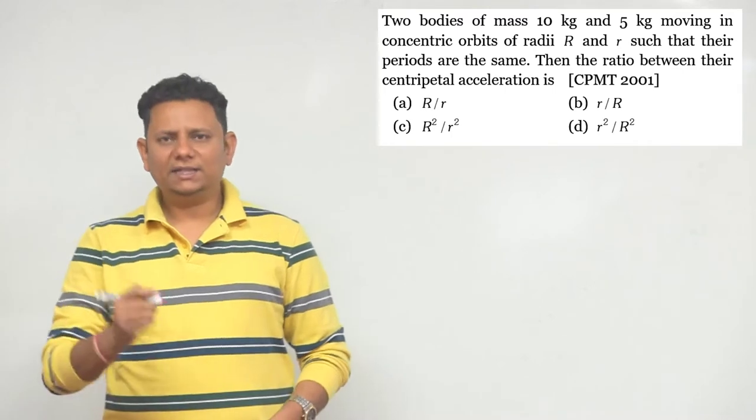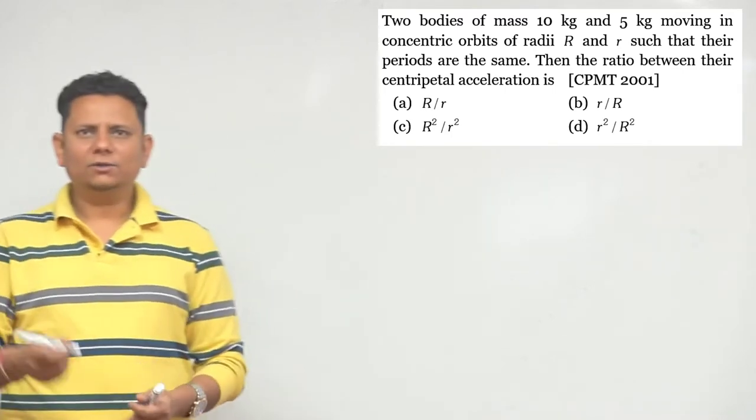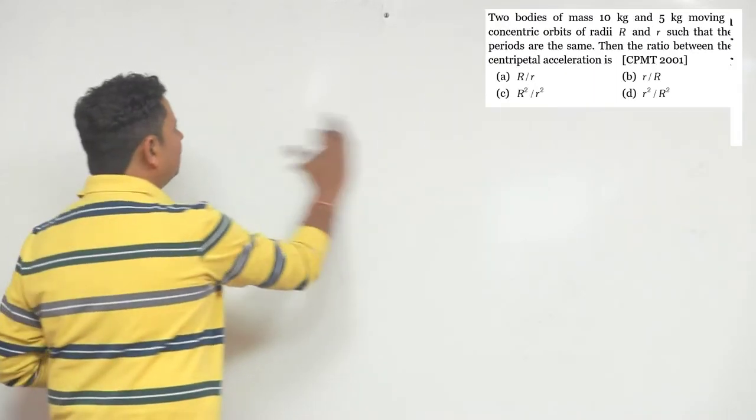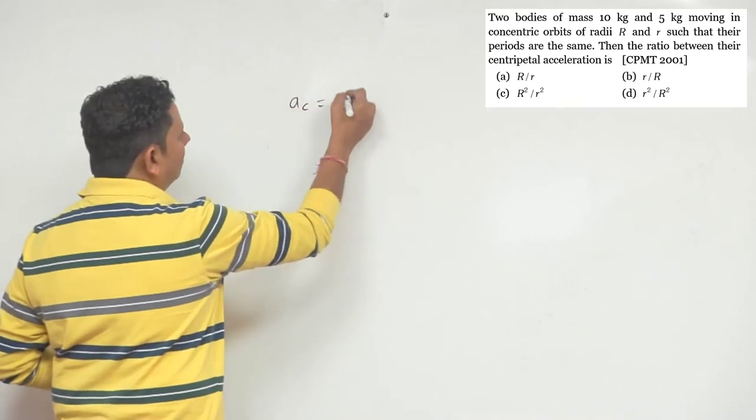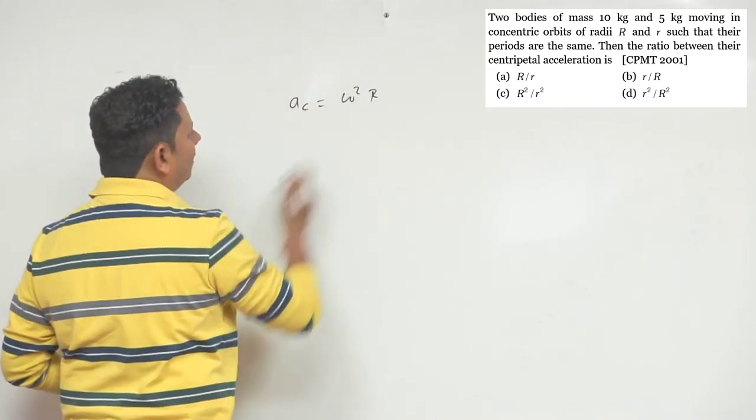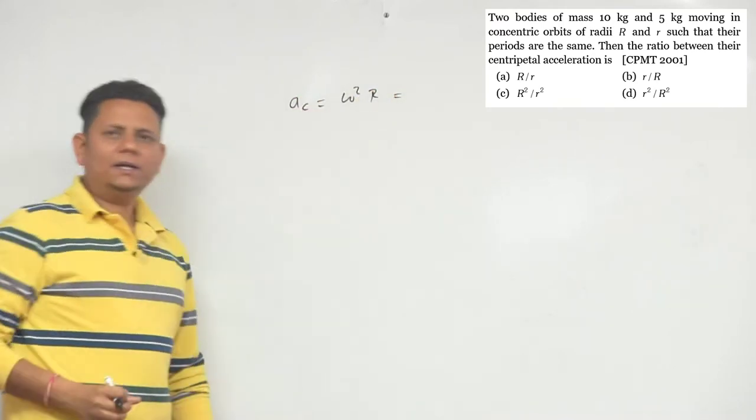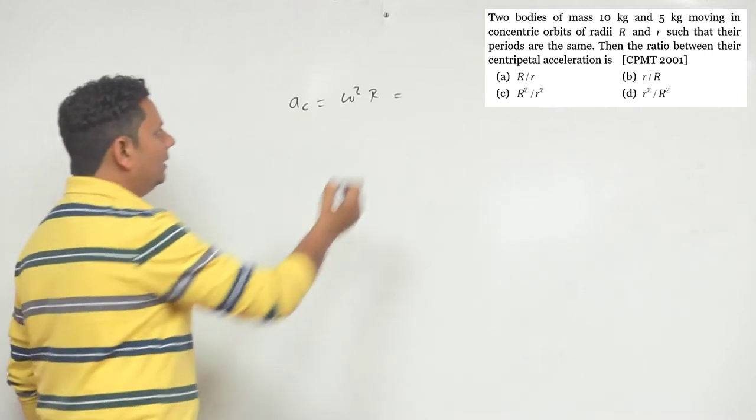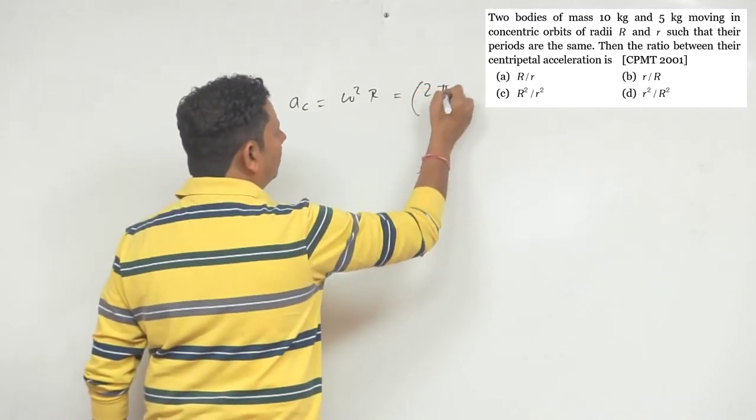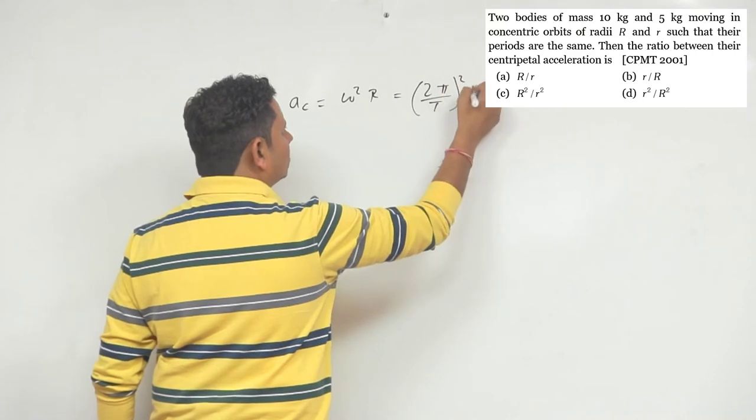And centripetal acceleration, what relation and what ratio is? Now as we know, centripetal acceleration we can write as omega square r. And in time period terms we can write this will be equal to 2π divided by T, square r.